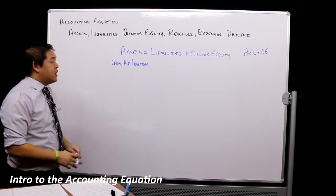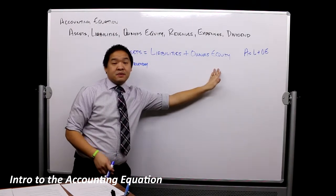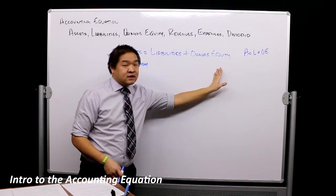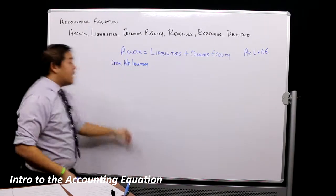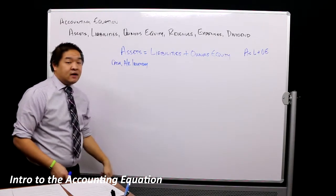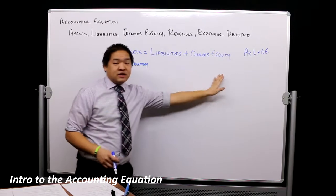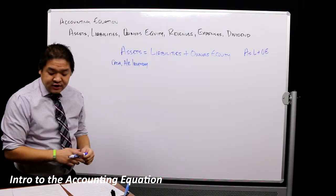With the accounting equation, if this side goes up, then this side will have to go up somehow—liabilities or owner's equity has to go up, or another account within this category has to go down so that we have a net zero change on this side and nothing changes over here.